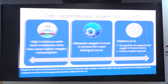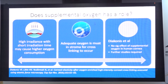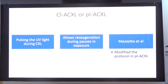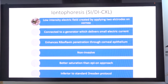The role of supplemental oxygen will be covered separately. There are two other types: continuous accelerated collagen crosslinking and pulsed accelerated crosslinking. In pulsed accelerated crosslinking, the UV radiation is pulsed so that there is sufficient time for the cornea to achieve oxygenation. Pulsed protocols have been found to be more efficacious compared to continuous accelerated collagen crosslinking.